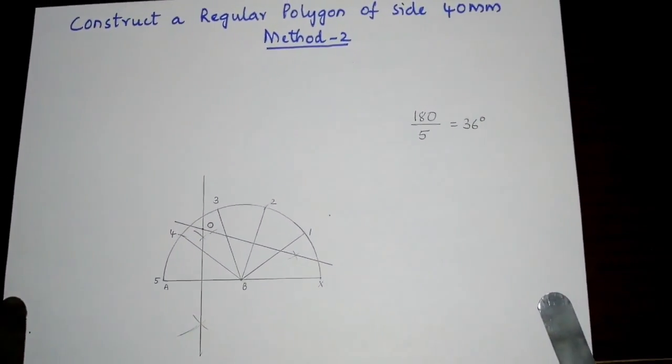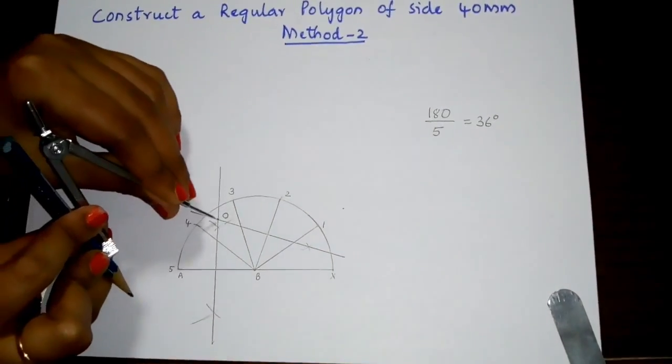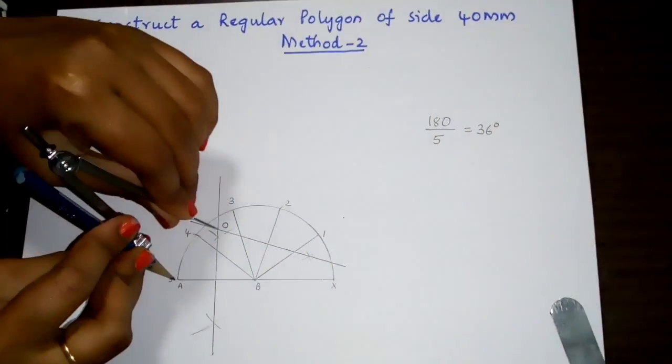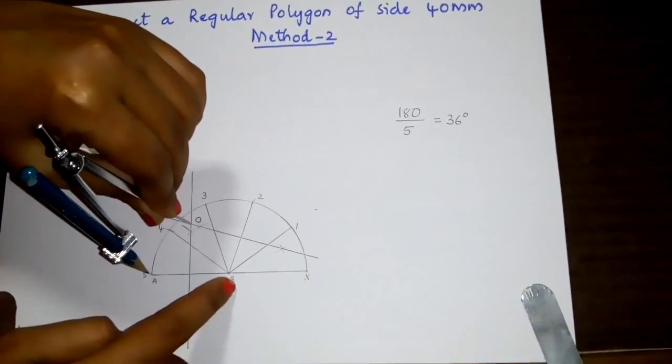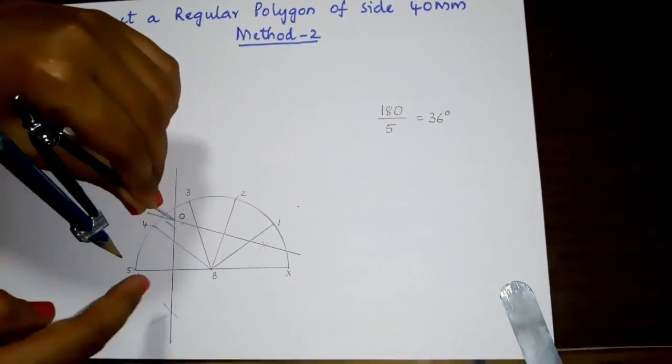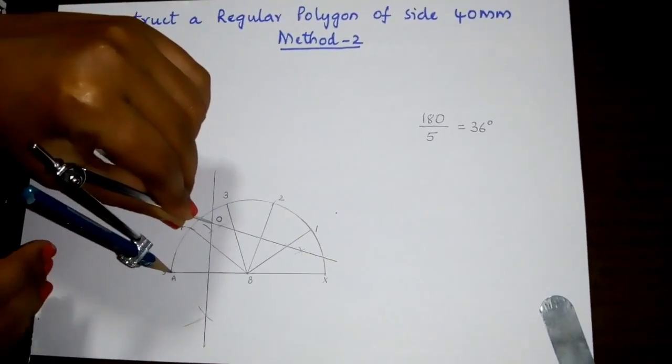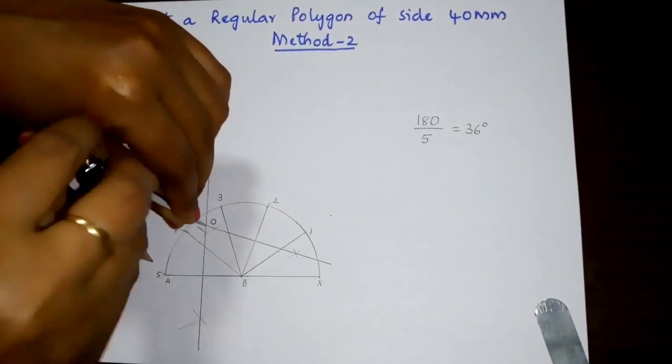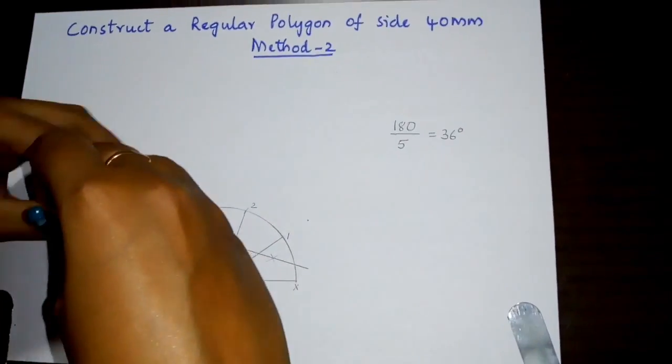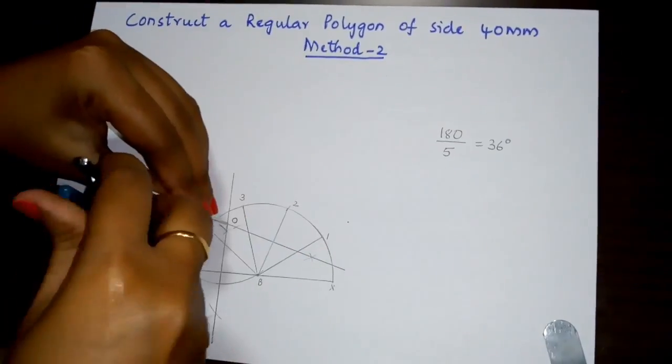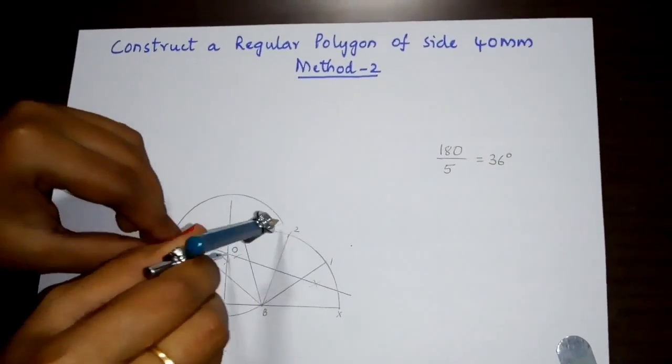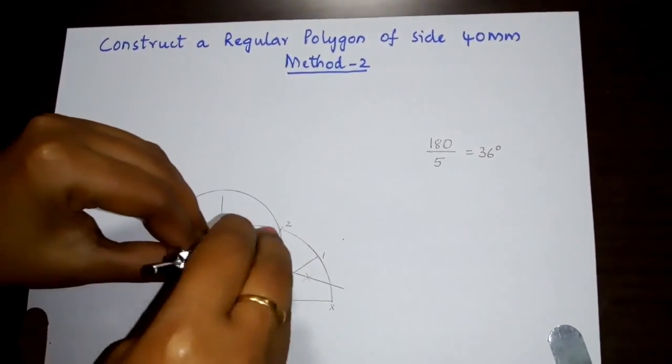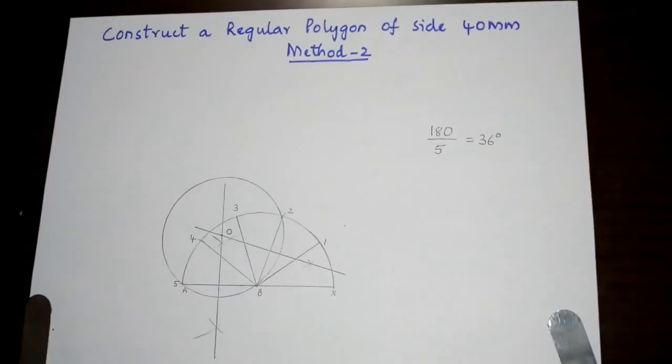Now take a compass. With O as center and OA as radius, draw a circle touching point B.